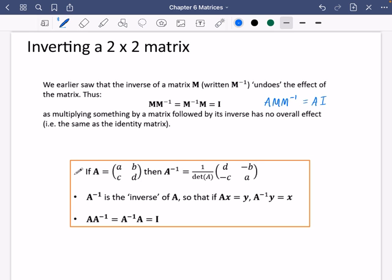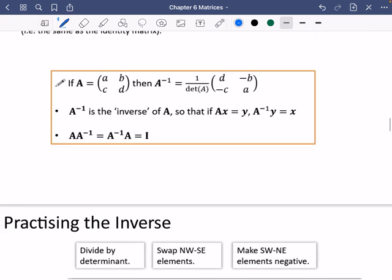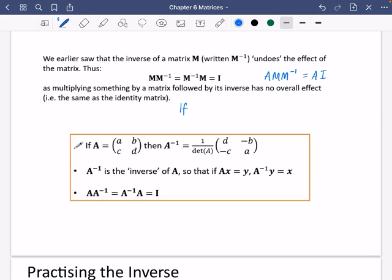A little side note here is that if a matrix is self-inverse, then we could say that A would be equal to A inverse. Which also means that A multiplied by A inverse would be equal to the identity. But because they're equal to each other, we could therefore say that A multiplied by A is equal to the identity. In other words, if you square the matrix, you get the identity matrix.